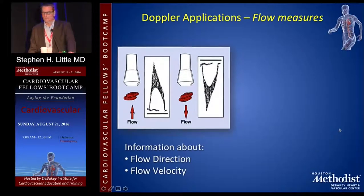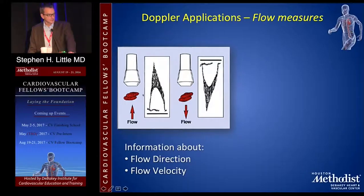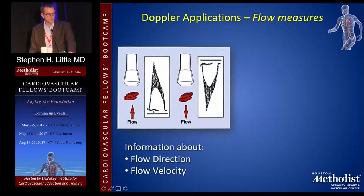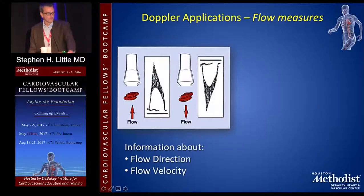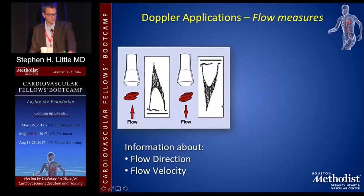For Doppler applications: the probe detects red blood cells moving towards it, and this is displayed on pulse wave Doppler. Time is across the bottom, and the waveform represents a population of blood cells moving in. The more this looks like a thin line drawn by a pencil, the more uniform and laminar the flow. We get quantitative information from Doppler about the direction and velocity of flow.